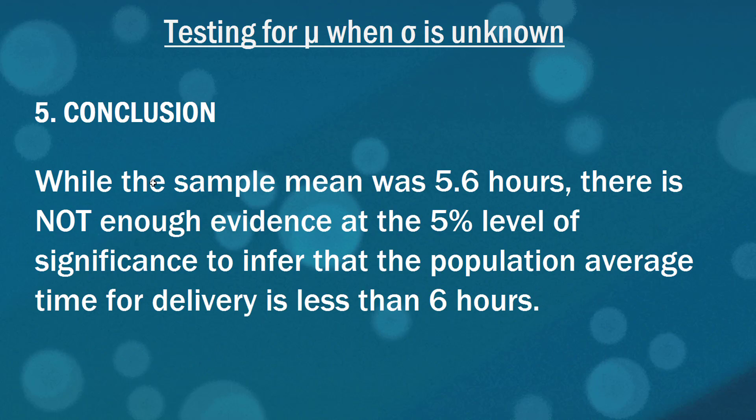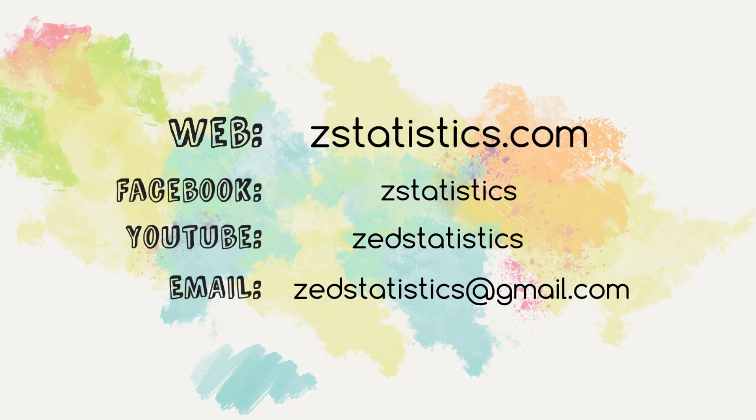Our conclusion then is that while the sample mean was 5.6 hours there is not enough evidence at the 5% level of significance to infer that the population average time for delivery is less than six hours. It's quite interesting, isn't it? The sample mean was actually less than six hours but it wasn't far enough away from six for us to reject that as a null hypothesis. In other words we have insufficient evidence for it. But that's it, thanks for watching.